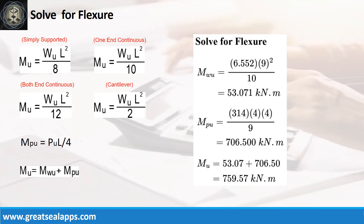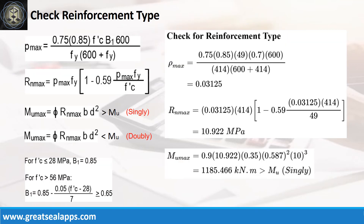Given factored uniform load of 6.552 kN per meter, factored concentrated load of 314 kN, and L equals 9 meters: the maximum moment from uniform load is 53.071 kN·m, and the maximum moment from concentrated load is 706.5 kN·m, for a total maximum design moment of 759.57 kN·m. The ρ max from the given design criteria is 0.03125, RN max equals 10.922 MPa, and MU max is 1185.466 kN·m, which is greater than 759.571 kN·m — confirming a singly reinforced beam design.